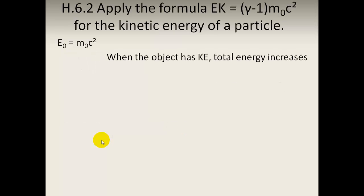As an object has kinetic energy, its total energy must rise. Its total energy is equal to the rest mass energy plus the kinetic energy, and this is also equal to mc squared, which equals gamma times m0. So we substitute that into the total energy.